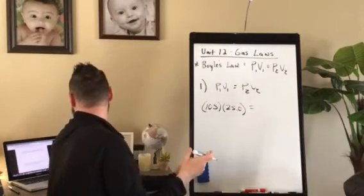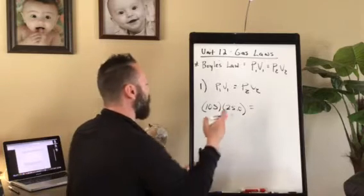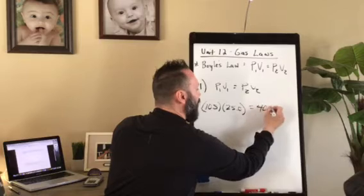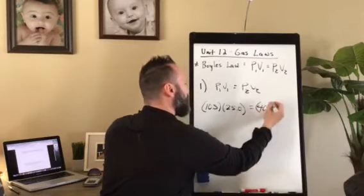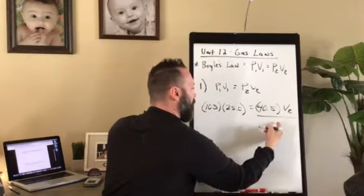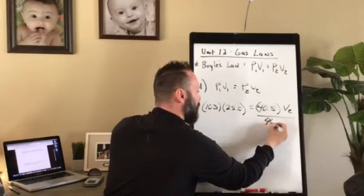And then the pressure went down from 105 kPa to 40.5 kPa. And so it's asking, what is its new volume? So to isolate our volume of our second gas, we're going to divide by 40.5.